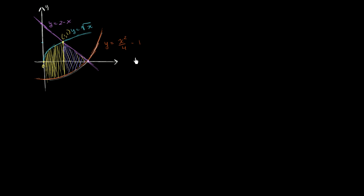So let's first think about this first region. Well, that's going to be the definite integral from x equals 0 to x equals 1. And our upper function is square root of x. So square root of x, and then from that we want to subtract our lower function. Square root of x minus x squared over 4 minus 1. So minus x squared over 4 minus 1. And then, of course, we have our dx.